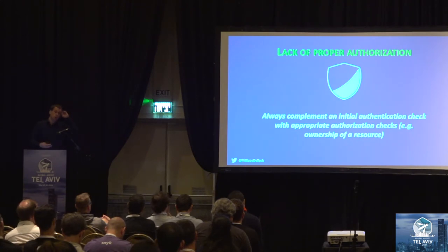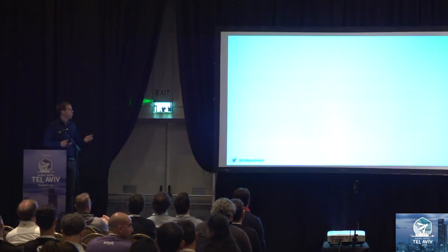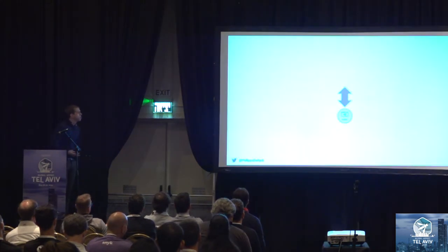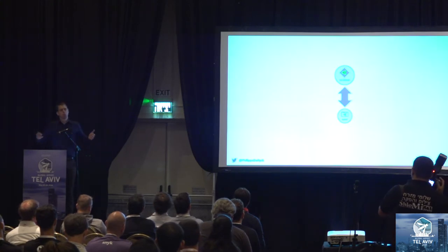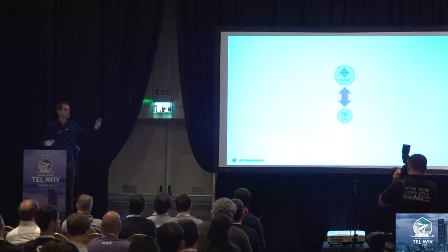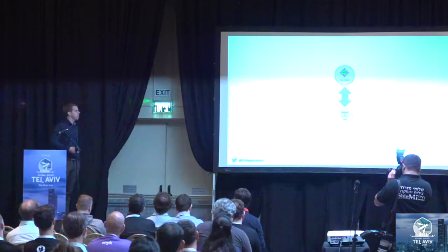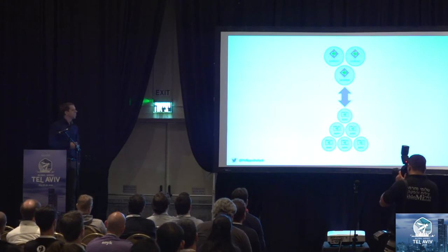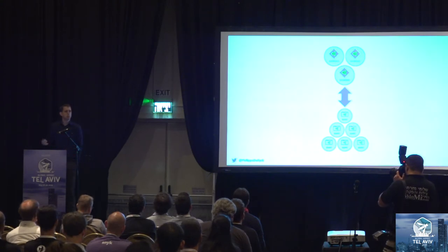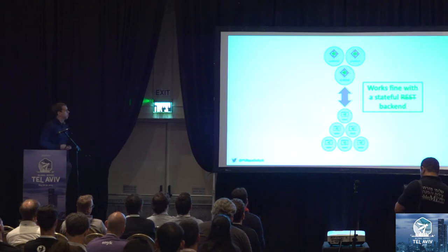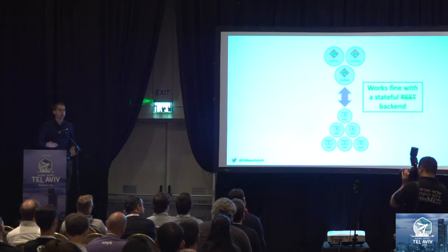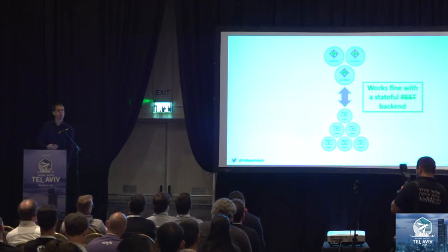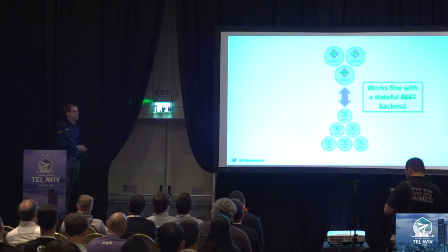To do authorization, you need to know who's making the call. Very traditionally, if you have a client and a backend, you used to have a session. With a session object, you know who is making the call. Sessions work very well if you have a small number of clients and servers — this is a stateful system. It's probably not a REST API because REST is supposed to be stateless, but this is how we used to build applications.